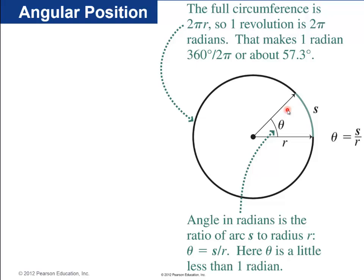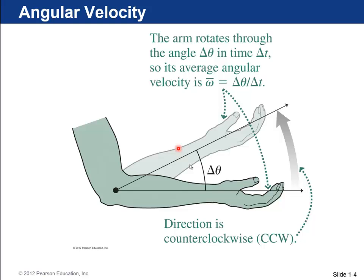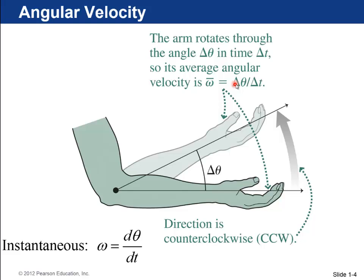Now we talk about angular velocity. This arm rotates some angle delta-theta in a time delta-t. So its average angular velocity, omega-bar, is delta-theta divided by delta-t. The direction for positive angular velocity is usually counterclockwise, because we usually start from the x-axis and go up towards the y-axis. The instantaneous angular velocity omega is the limit of the average as delta-t goes to zero — that's the same as the derivative dθ/dt.